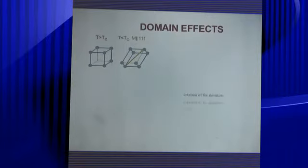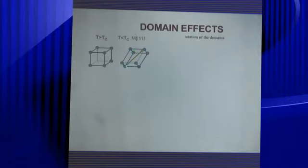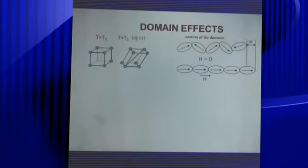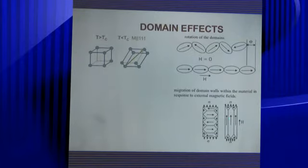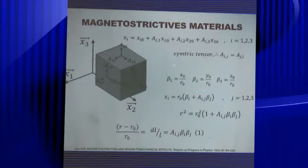Magnetostriction is an effect of magnetic domains. Above the Curie temperature TC, the sample shows a paramagnetic phase. When cooled below TC, magnetization appears — for example, in the 1-1-1 direction — causing a change in the size of the crystal cell. When a zero field is applied, the magnetic domains are randomly oriented; applying the field orders the magnetic domains, changing the sample size. Migration of domain walls is responsible for this change in sample size.